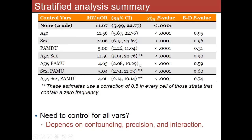The BDP value stands for Breslow-Day — the test of interaction. These are all not significant, which is telling us that we don't believe the odds ratio is varying across the strata — there's essentially one odds ratio and it's not being modified by these other factors we're stratifying on.